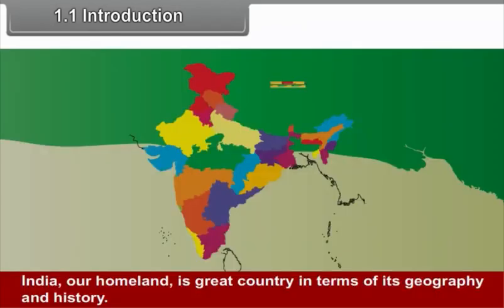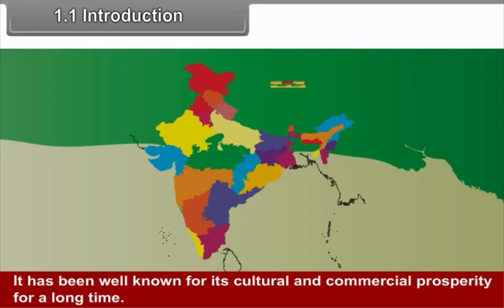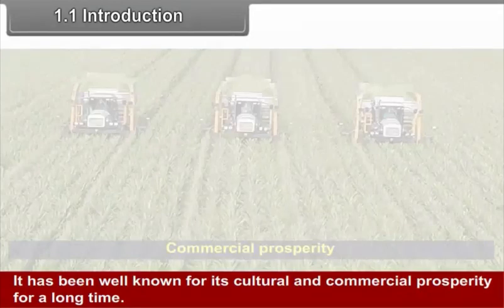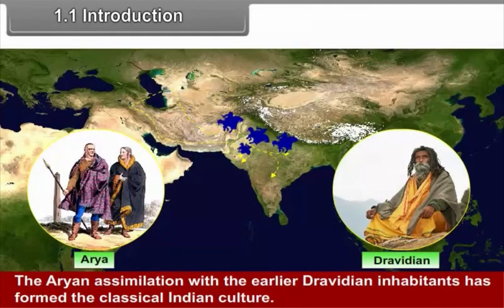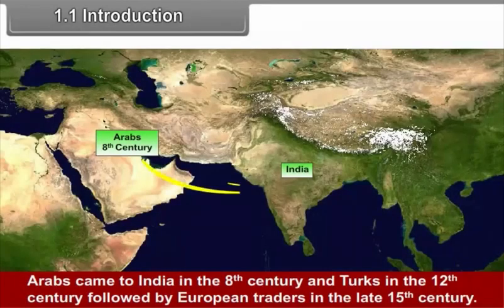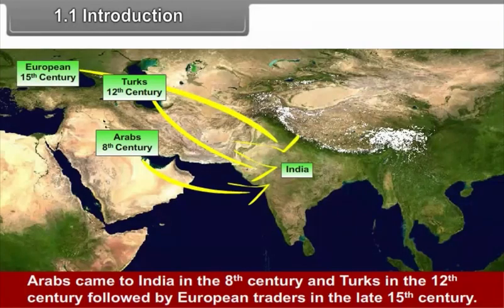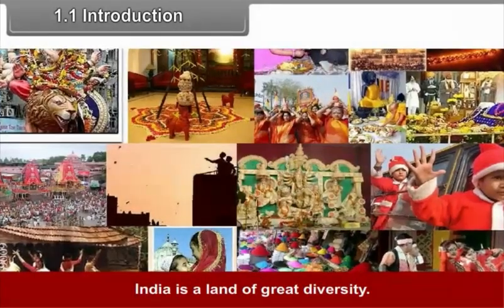India, our homeland, is a great country in terms of its geography and history. It has been well known for its cultural and commercial prosperity for a long time. The Aryan assimilation with the earlier Dravidian inhabitants has formed the classical Indian culture. Arabs came to India in the 8th century and Turks in the 12th century, followed by European traders in the late 15th century. India is a land of great diversity.